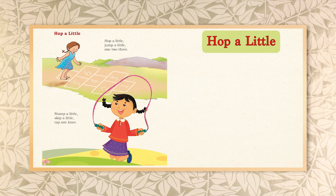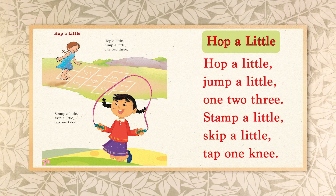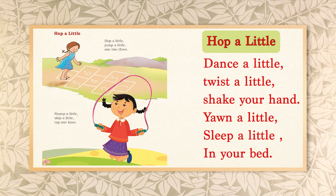Now let's end our session with an interesting poem called 'Hop a Little.' Here we go: Hop a little, jump a little, one two three. Stamp a little, skip a little, tap one knee. Hop a little, jump a little, one two three. Stamp a little, skip a little, tap one knee. Dance a little, twist a little, shake your hand. Yawn a little, sleep a little in your bed.